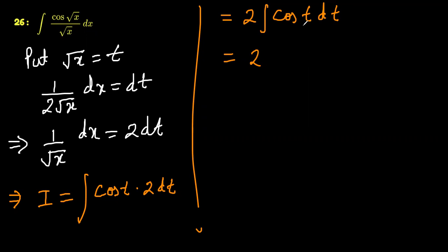So 2 times the integration of cos t is sine t, because it is a function of t, plus c.